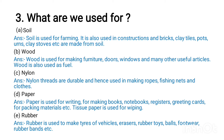Question 3, number one: A) Soil. Answer: Soil is used for farming. It is also used in construction. Wood obtained from trees is used for making furniture and many other useful articles.